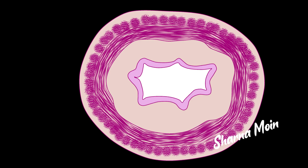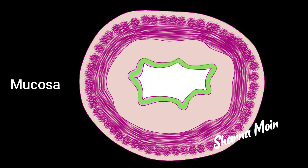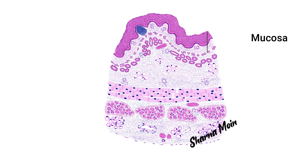Histologically, the oesophagus has four layers from inside to outside: the mucosa, the submucosa, the muscle layer, and the serosa or the adventitia. You can see the first layer, the mucosa — it lies close to the lumen of the oesophagus — and the serosa is the outermost one. Let us unwrap these layers one by one.